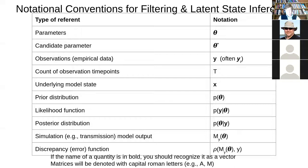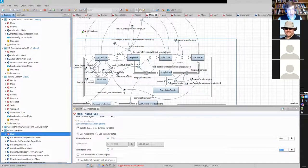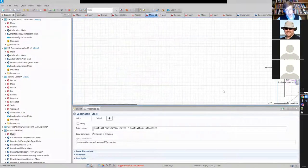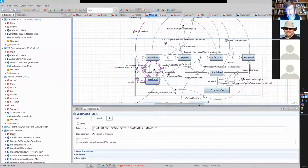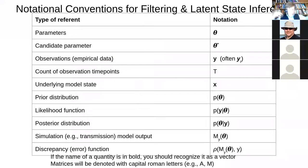Observations will be denoted using Y, per conventions in much of statistics. There'll be a count of observation time points, a total count of T. The underlying model state is a vector we denote X. In a model like this, model state would be composed of some number of susceptibles, exposed, infectives, recovered, hospitalized, cumulative deaths, vaccinated — the value of each of those stocks. If I gave you a value for each of those stocks, you could stop the model, freeze-dry it, close the modeling program, come back later, plug it in, and continue running the model. That's the model state.